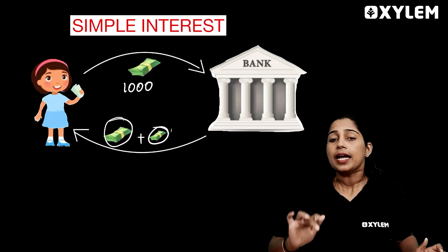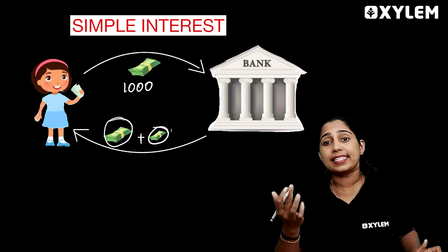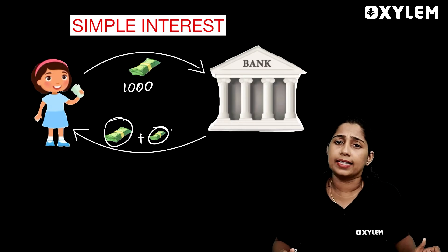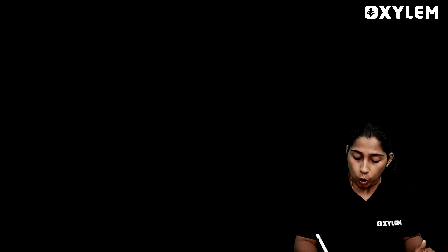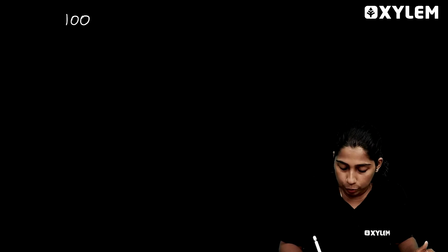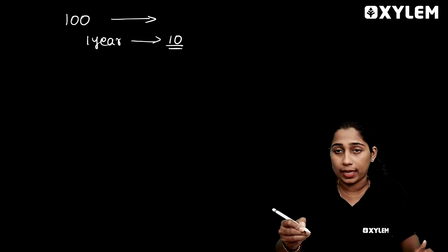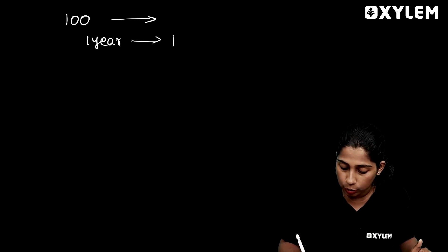This bank amount is calculated by the interest rate — calculated by the percentage. If you have 100 rupees and you deposit 100 rupees in the bank, and you earn 10 rupees in a year, you have 110 rupees in the bank.